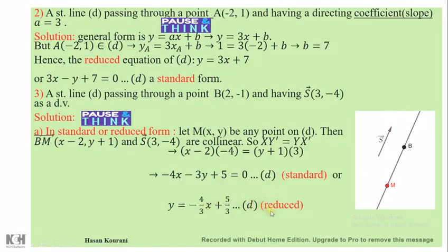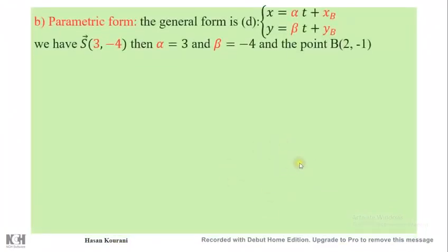Now in parametric form. Remember that the general parametric form is: x = αt + x_B (a point on d), y = βt + y_B (a point on d).